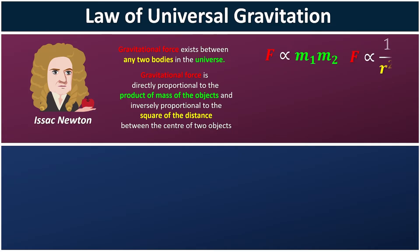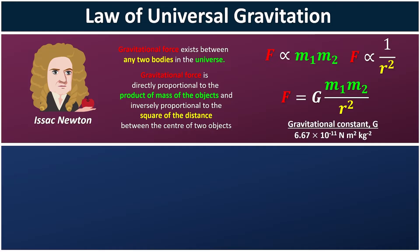These two relationships proposed by Isaac Newton allow us to form the formula: F equals G times M1 times M2 over R squared. G is our gravitational constant, which has the value of 6.67 times 10 to the power of negative 11 Newton meter squared per kg squared.